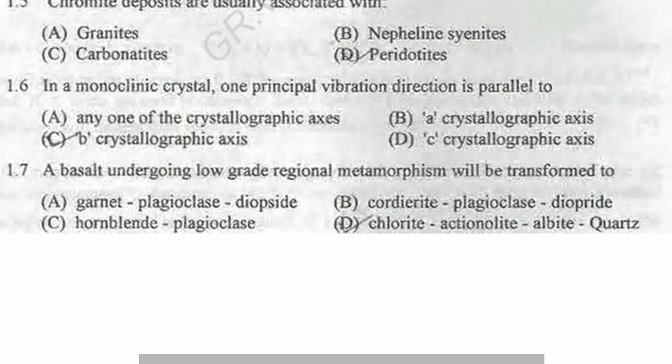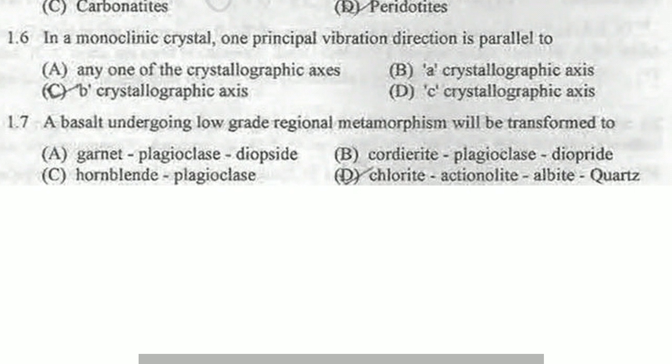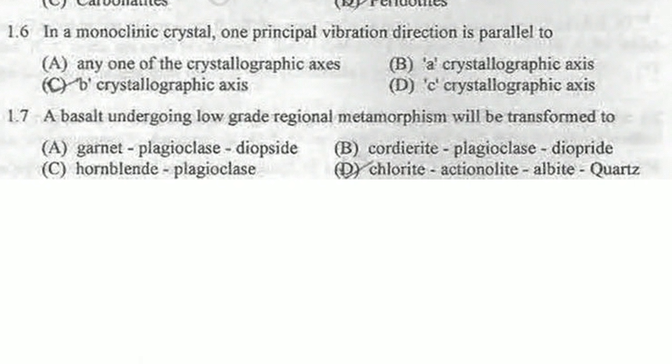Next question: in a monoclinic crystal, one principal vibration direction is parallel to which crystallographic axis — B, A, C, or any? This is very clear — it is always parallel to the B crystallographic axis, while the A and C axes are inclined to each other. For more detail you can visit notes on biaxial minerals or refer to books on principles of crystallography. B crystallographic axis is the correct answer.